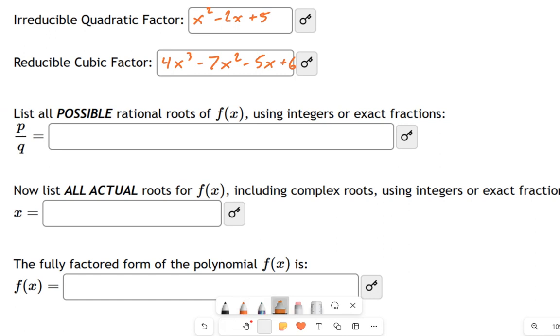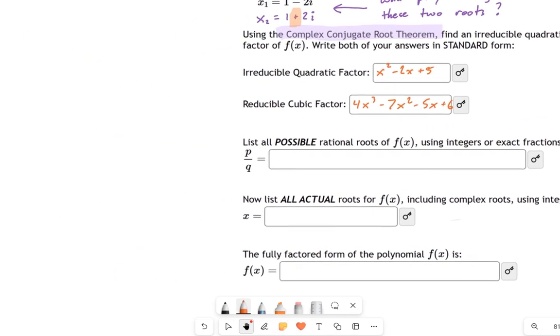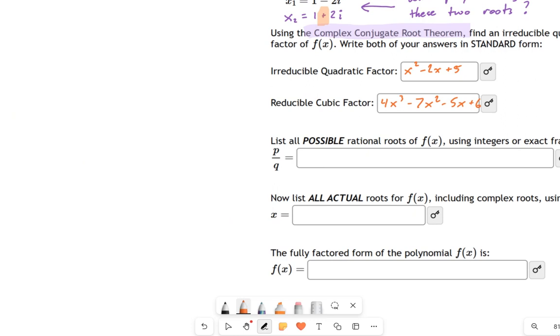Now we get to this next part, which is find all the possible roots of f(x). I can ignore the irreducible part. I'm just looking at the cubic portion now. If you remember what we do here, this is the p's and q's business. Remember the rational roots theorem. I'm going to take all the roots—I should say factors—of 6, this number at the end right here. I'm going to take all the factors of that, which is 1, 2, 3, and 6.